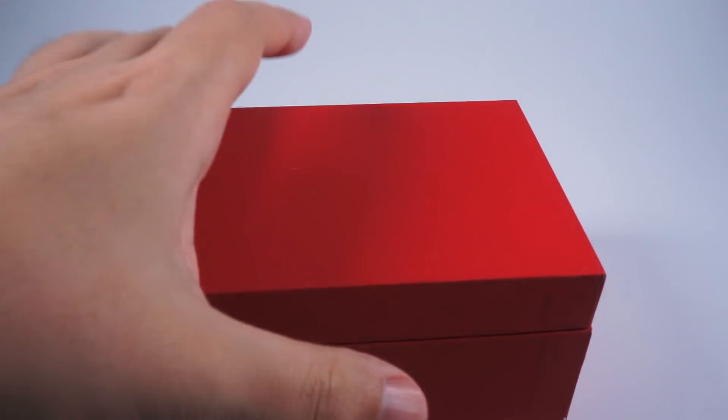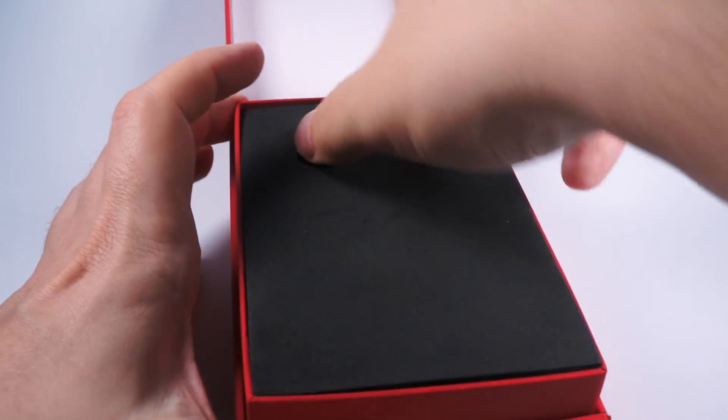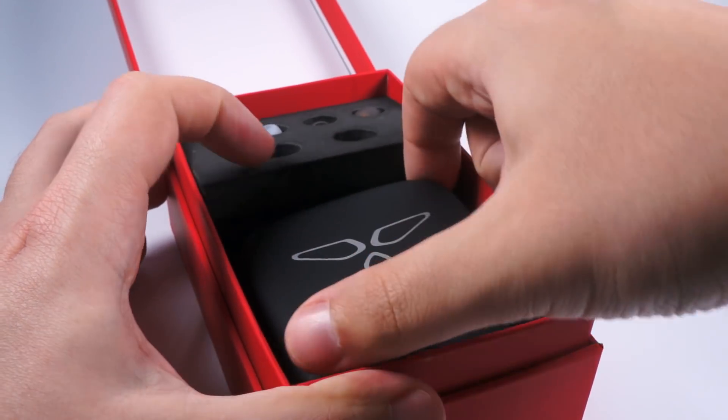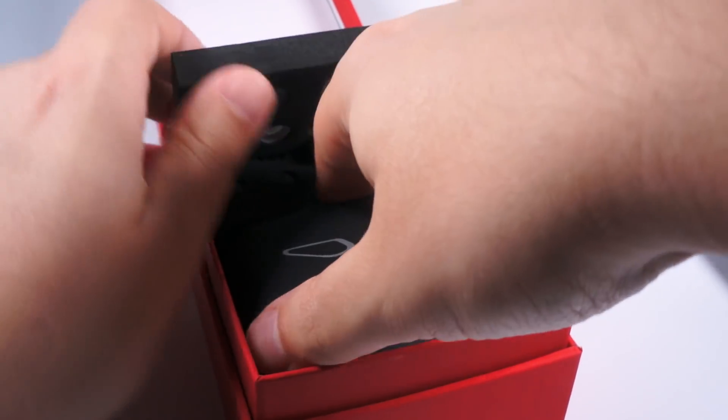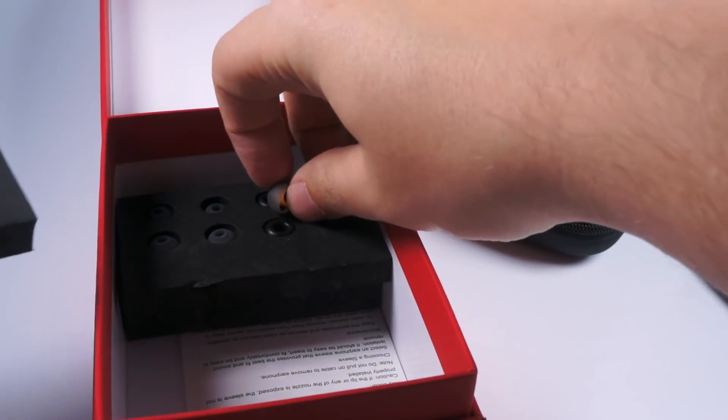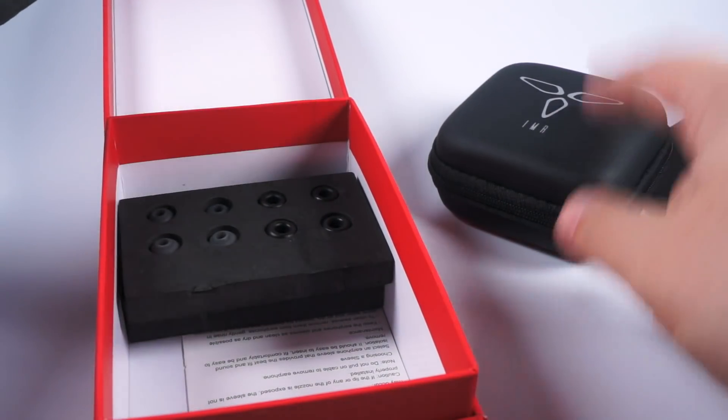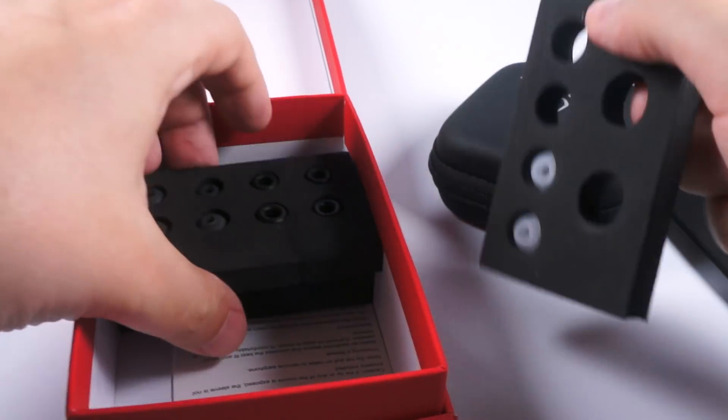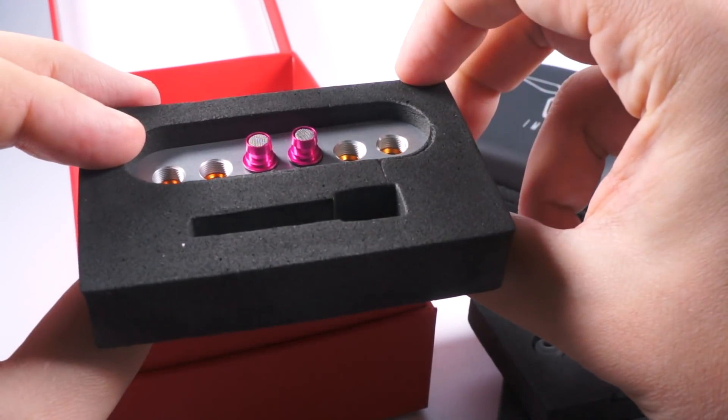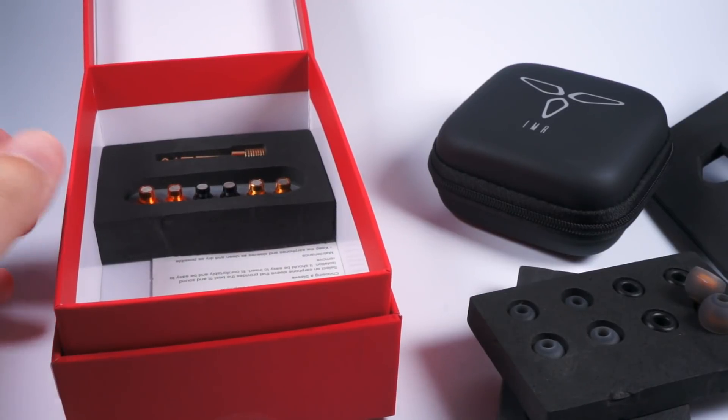Inner box is bright red looking pretty attractive. Here we have the IEMs themselves but I've already pulled them out, gave them burn in and auditioning, so I didn't disassemble them. I've just put them into the case. Let me pull it out. Case and three layers of inserts with different tips: single flange tips, double flange tips, two pair of foams, and also 6.3 millimeter adapter and the set of tuning filters. Accessory set is pretty nice.